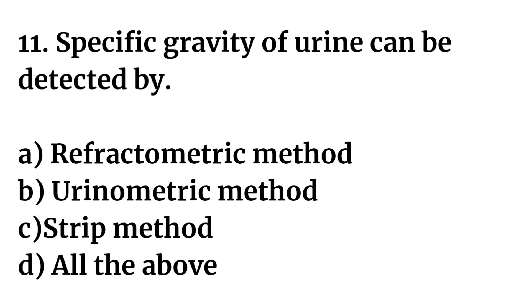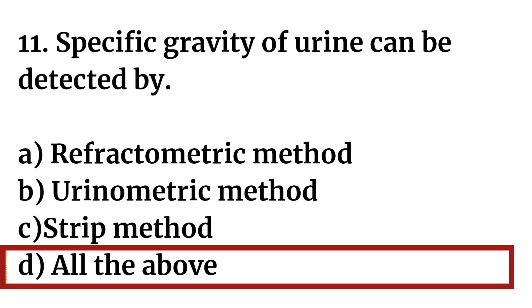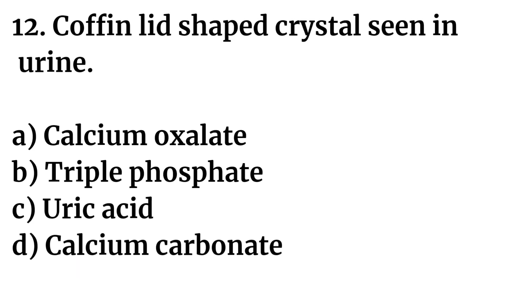Question number eleven: Specific gravity of urine can be detected by — Option A: refractometric method. Option B: urinometric method. Option C: strip method. Option D: all of the above. The right answer is Option D: all of the above. Refractometer, urinometer, and strip method are all used for detection of specific gravity of urine.